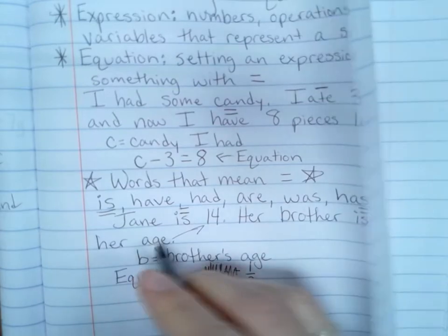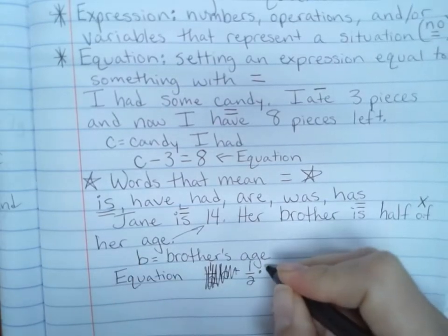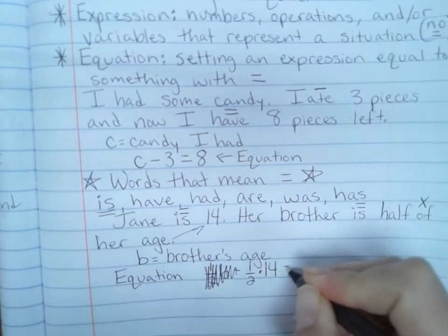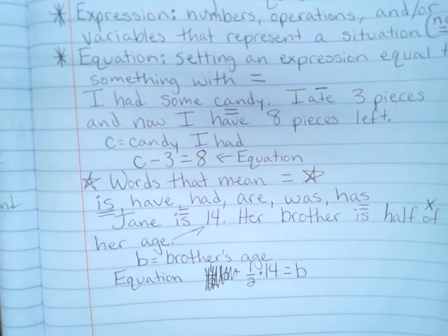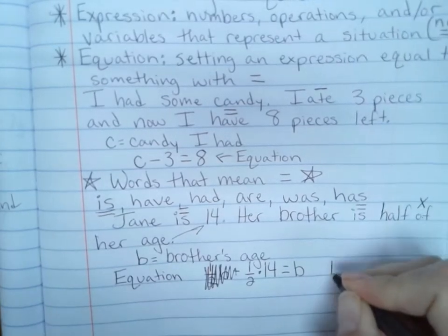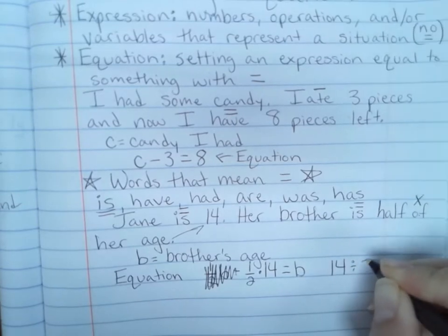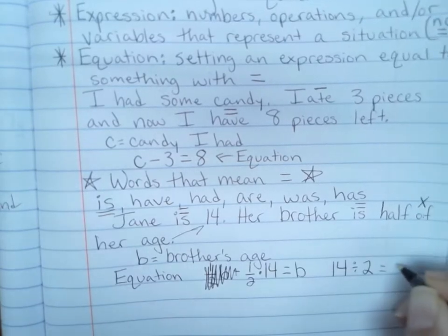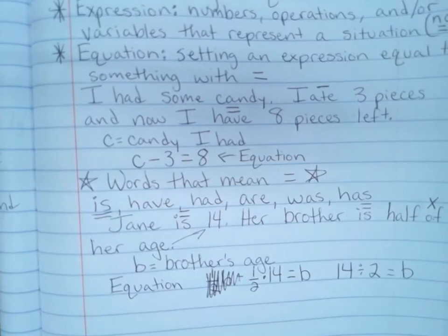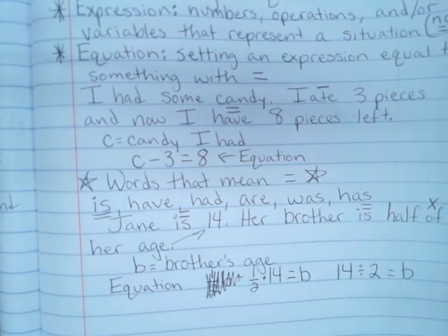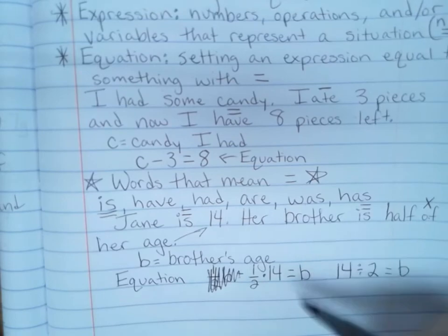Or we could do 14 divided by two, there's our half part, equals brother's age. Now from here you can figure out what brother's age is, but this would be an equation. All I did was turn the story into an equation.